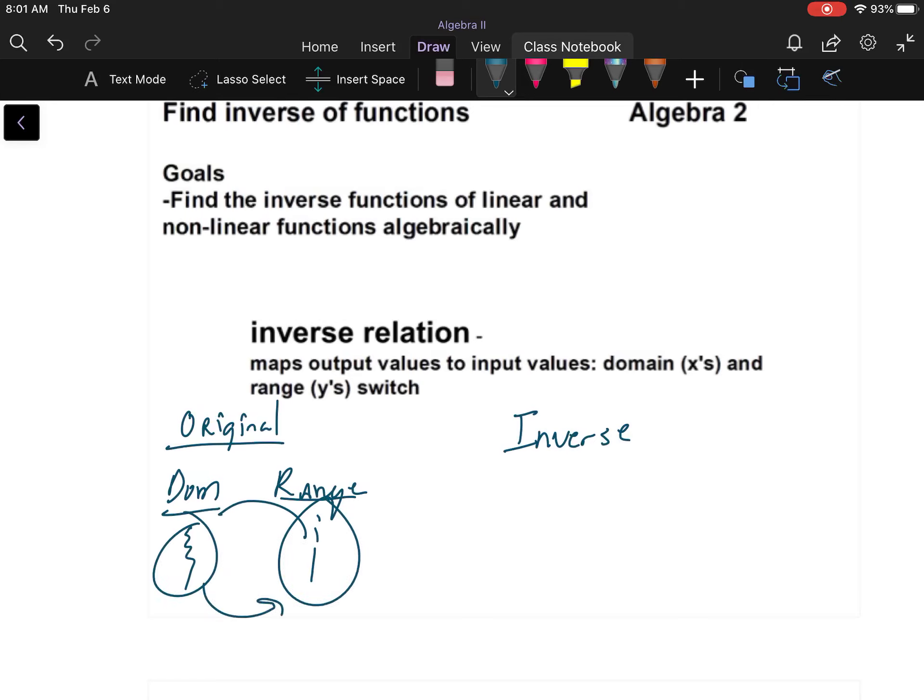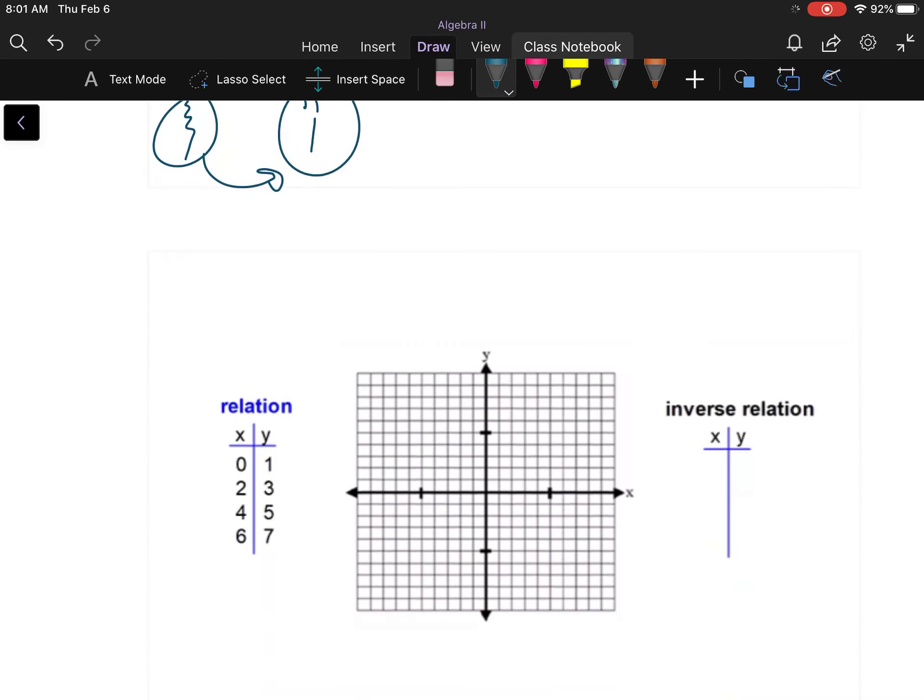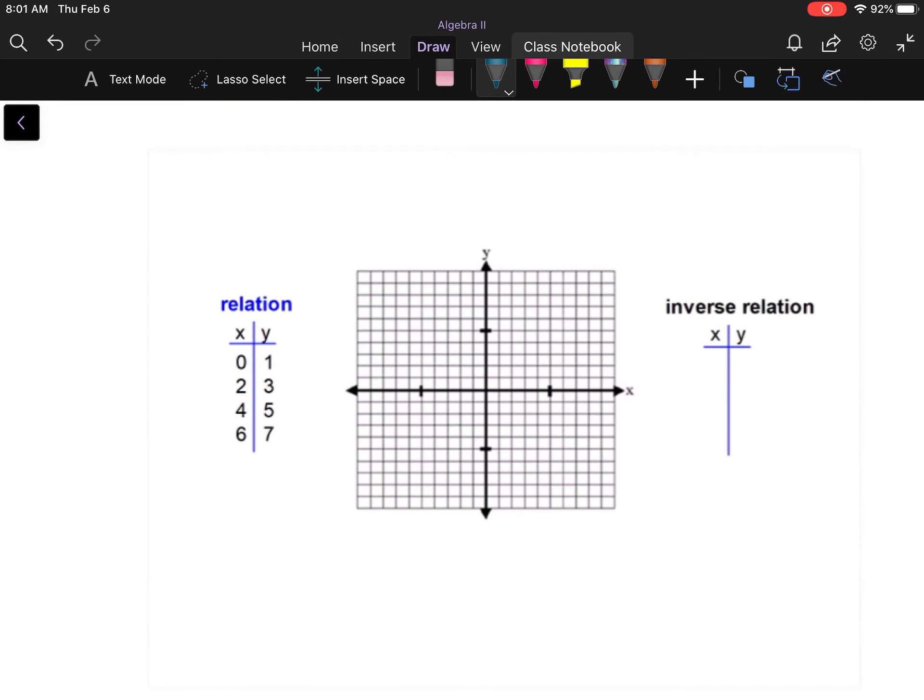For the inverse function, these switch spots with those. So what used to be your domain is now your range, and whatever is your range becomes your domain. Here's some numbers to kind of put together what I'm talking about. Here are all your domains and here are all your ranges. So if I want to come up with an inverse, these range values switch spots and become your domains: 1, 3, 5, 7. And your domains over here become your range.